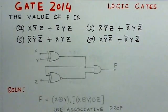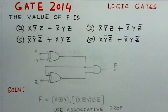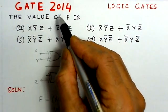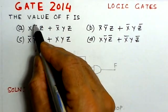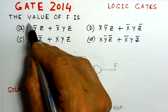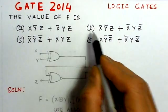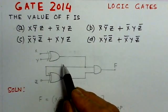The present problem is the third problem on logic gates, and this problem is from year 2014. We will read out the problem here. The value of F is, there are four options here, and the corresponding circuit is given here.